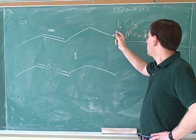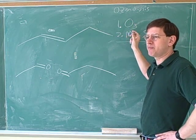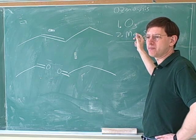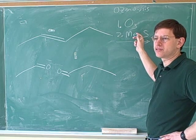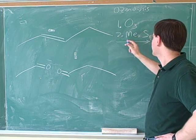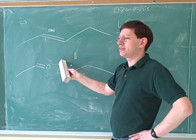So far so good. Notice that these are two separate steps. The first step is always adding ozone, and then the second step is a reducing agent: DMS, dimethyl sulfide here, Me2S is a good one, or zinc and acetic acid you might see used as well. So the second step could be either the zinc or the Me2S. The important thing is to be able to quickly draw a good product here.